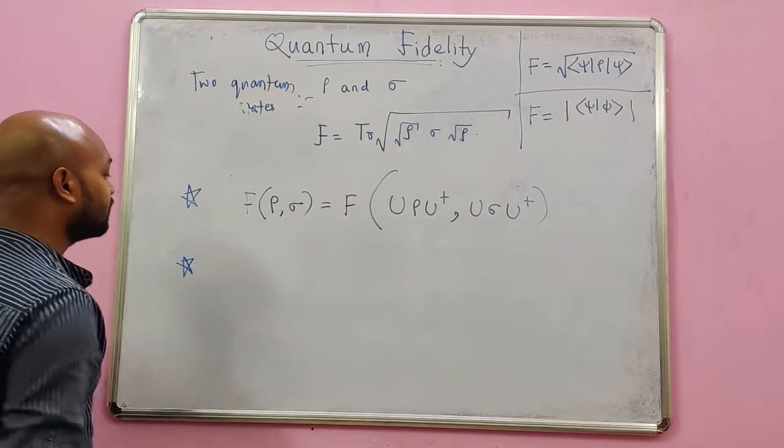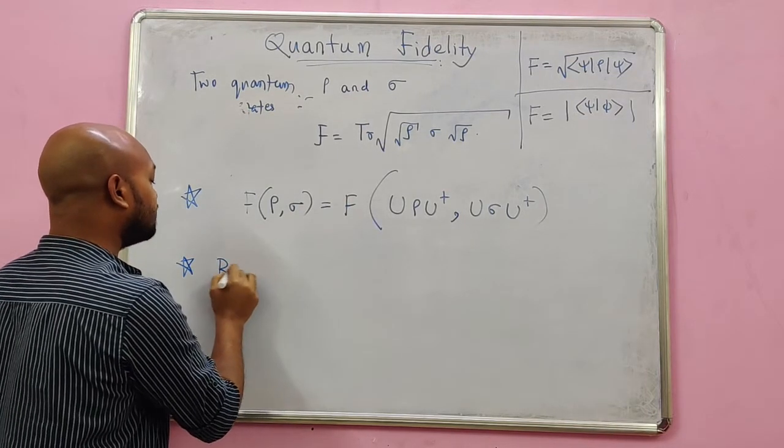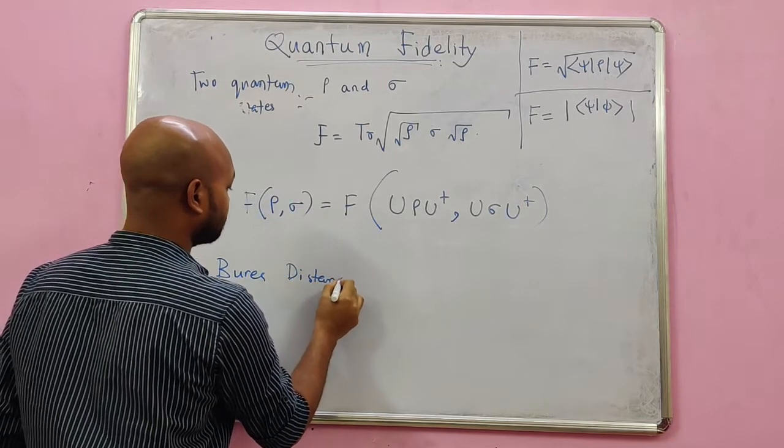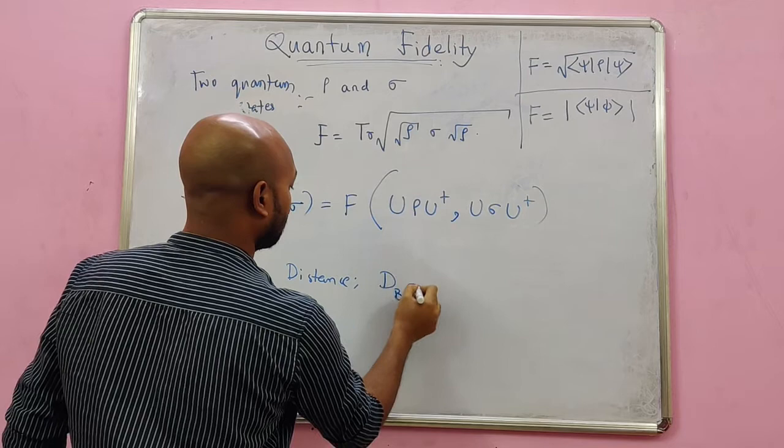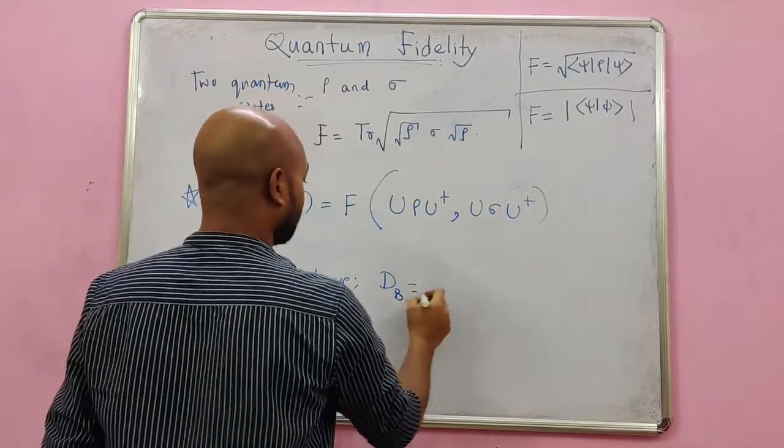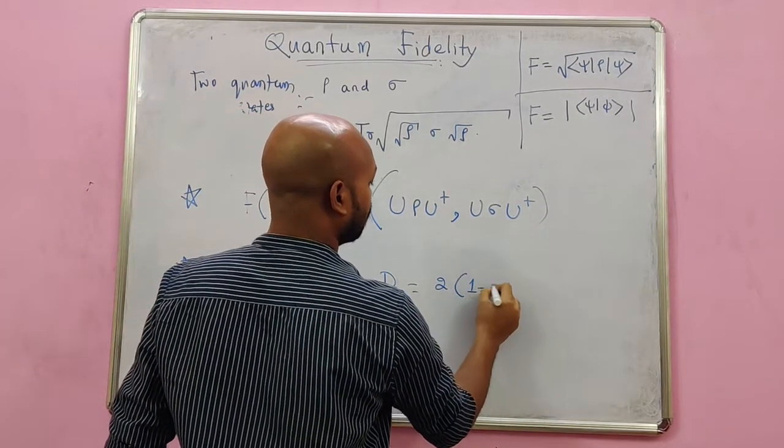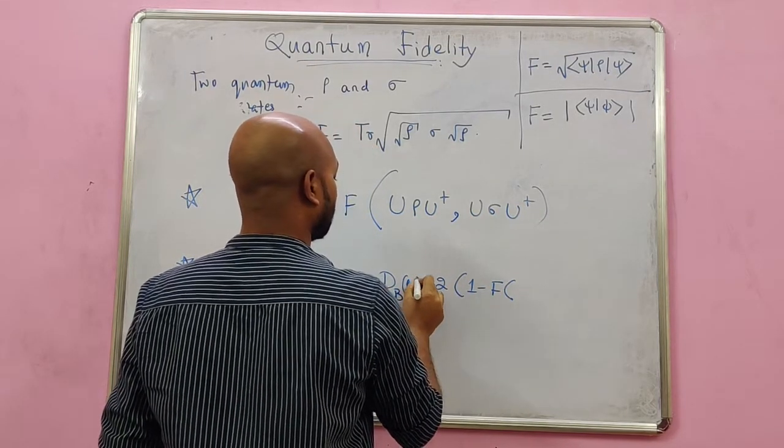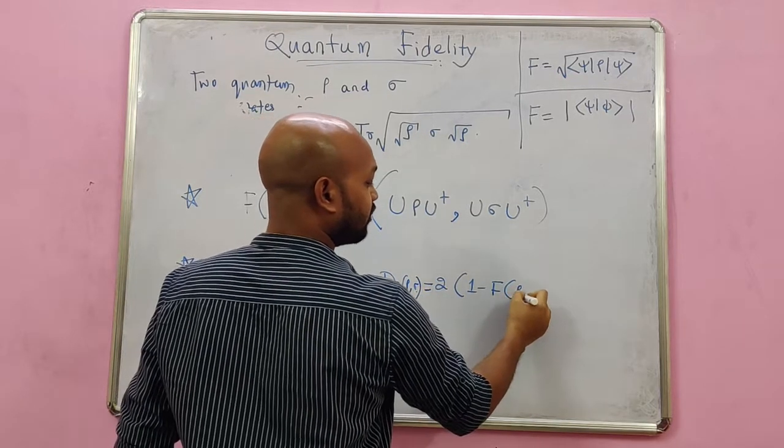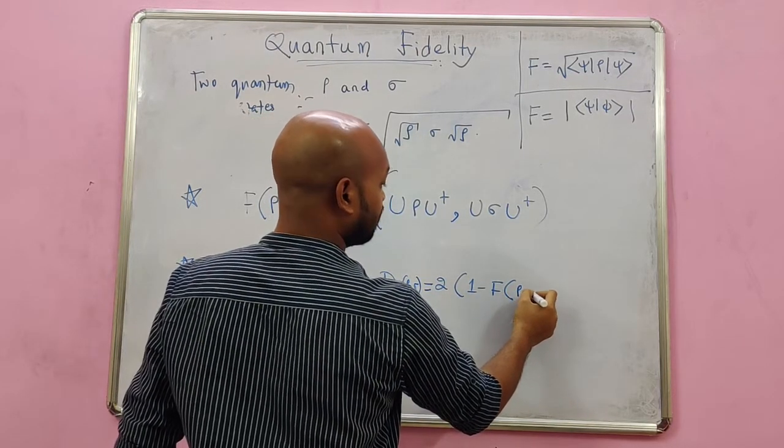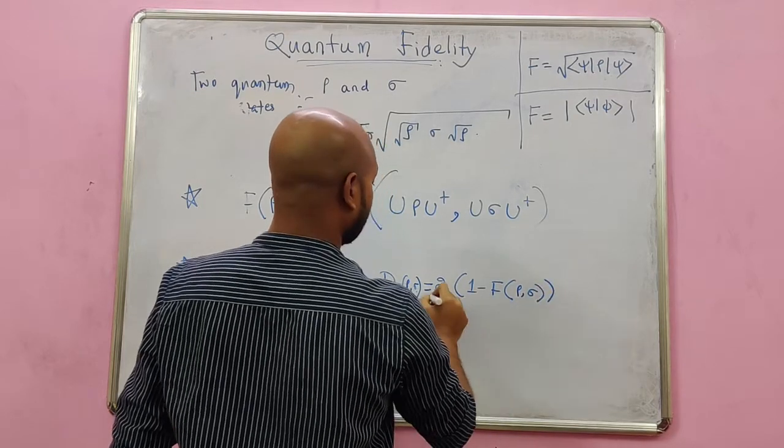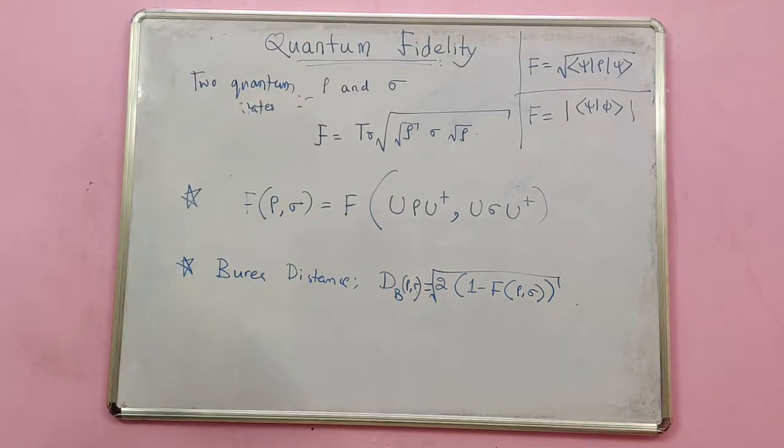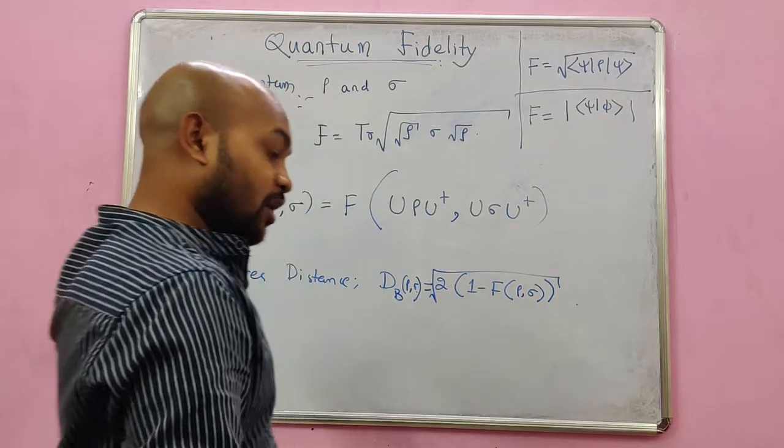Starting from fidelity, we can calculate another distance measure called as Bures distance. D_B - we have used D for trace distance, remember - is 2 times (1 minus fidelity). This is the Bures distance between ρ and σ: 2(1 - F(ρ,σ)). And the last remark is...